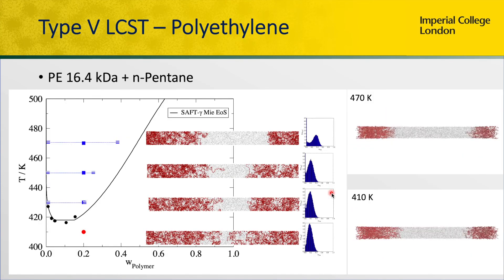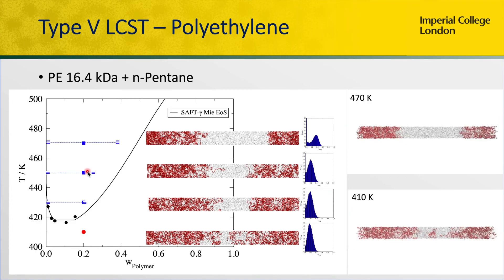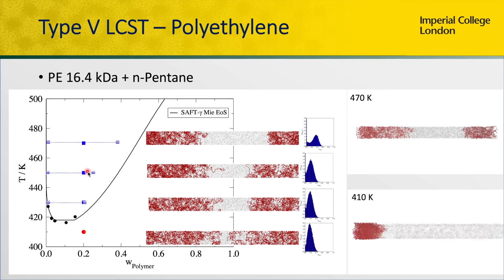The first case we show is the LCST — lower critical solution temperature — where we increase the temperature and the system becomes immiscible. As you can see on the left-hand side, there is excellent agreement between the molecular simulations (the red and blue dots), the black line which is the result of the equation of states, and the black symbols which are the experimental data. We get excellent agreement between all three, and this is purely predictive — no adjustable parameters were used to model the polyethylene with pentane.